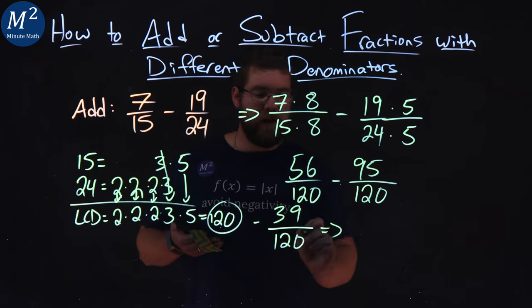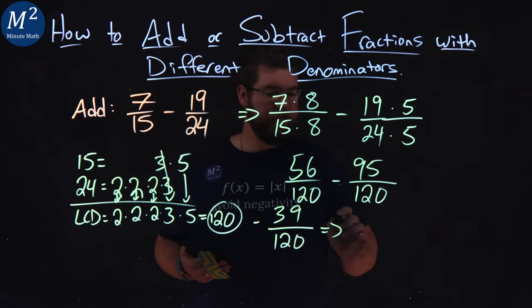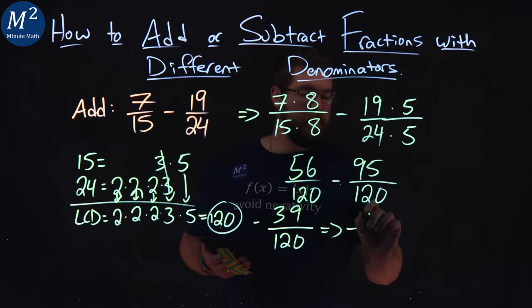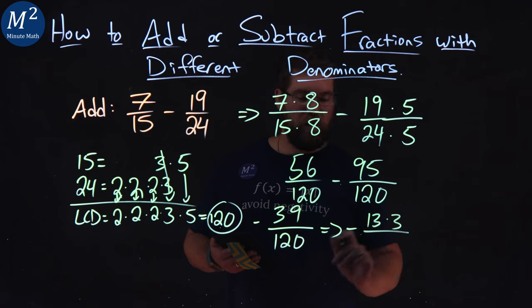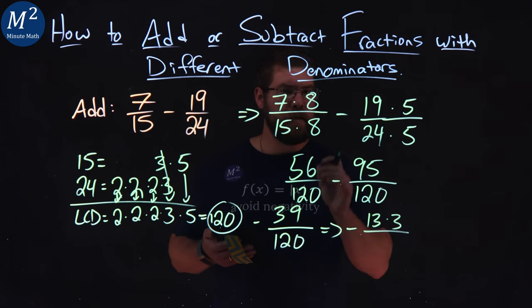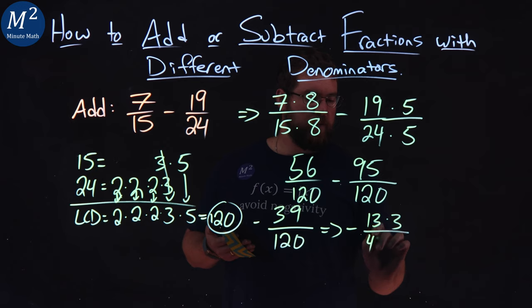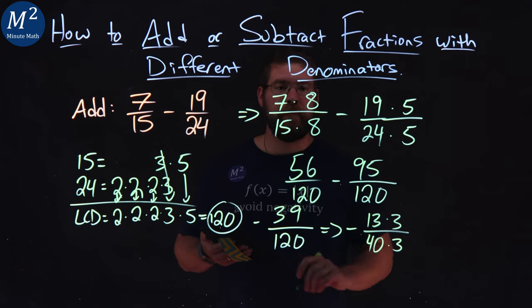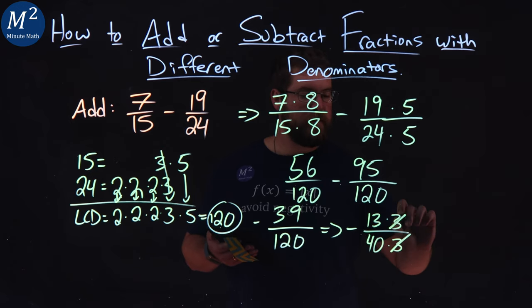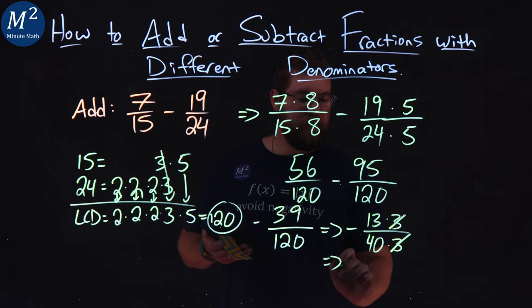This can simplify some more. 39 is 13 times 3 over 120. 120 divided by 3 is 40 times 3. From there, the 3s cancel and we're left with negative 13 over 40.